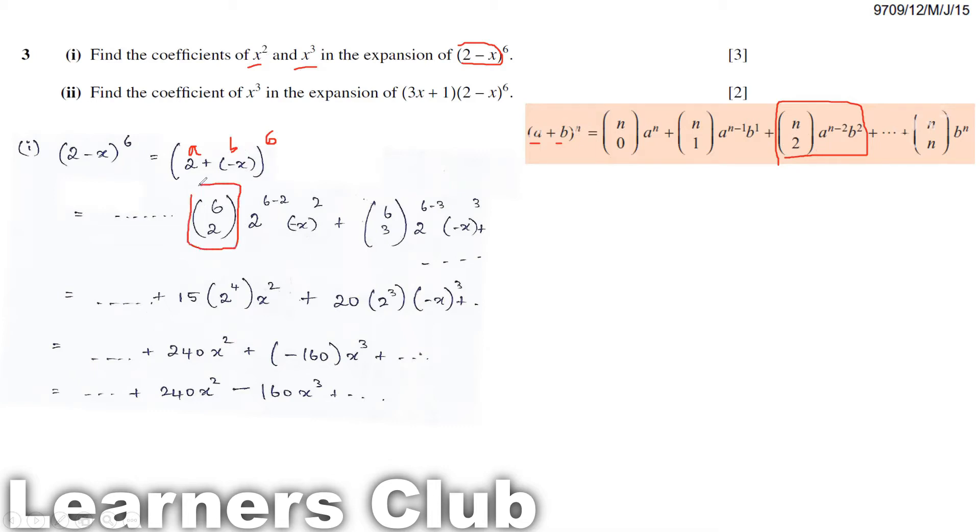First I'm taking 6C2, a to the power n minus 2, that is 2 to the power (6 minus 2). B is minus x, whole square.